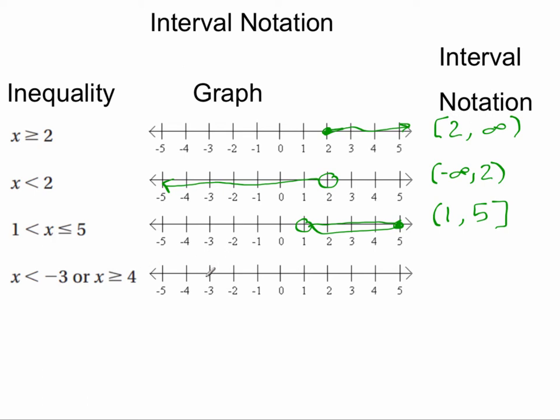Now, how would I represent x less than negative 3? Well, graphically, it's going to look like this, or x is greater than or equal to 4, so this one's going to be closed. So this is going to have two parts. This is going to be from negative infinity to negative 3, and these are both going to be open, and that is going to be unioned with closed bracket 4 to positive infinity.